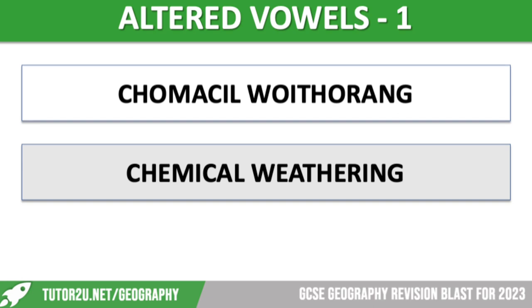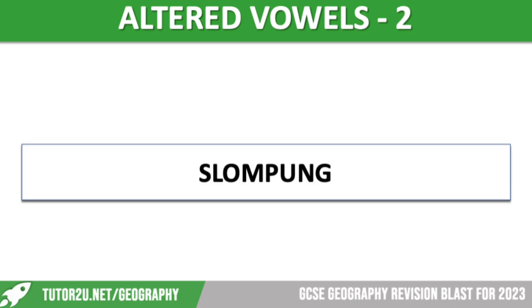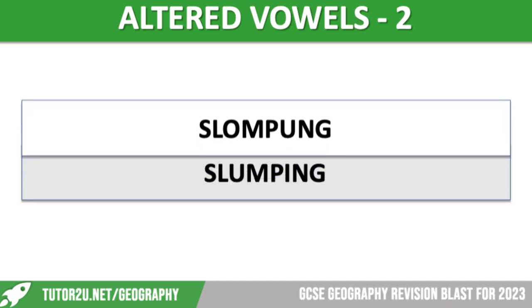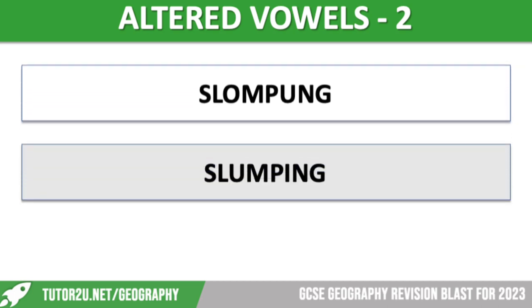Let's have a look at our next one — a little bit easier. You've only got two letters here that are incorrect, so it should be quite easy. This one is slumping, which is a form of mass movement. It happens when your cliffs get waterlogged. Particularly vulnerable are clay cliffs.